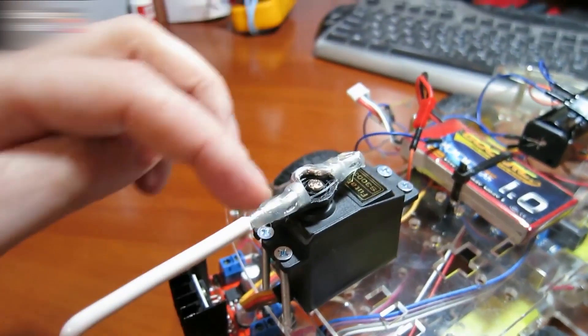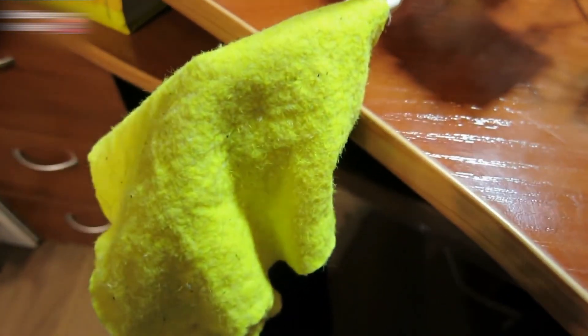Glue the wire to the servo and attach the rag to the end of the wire. Check how it works.